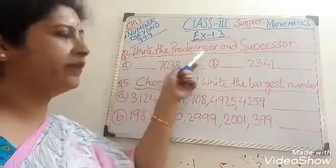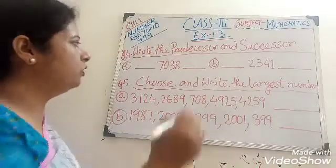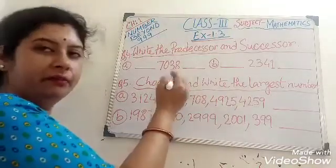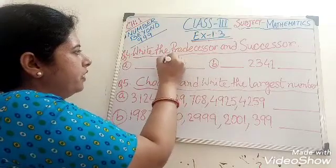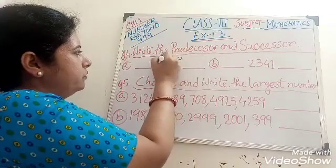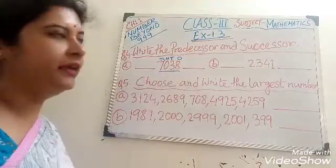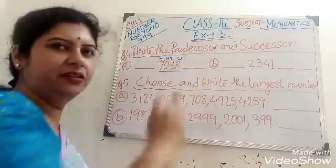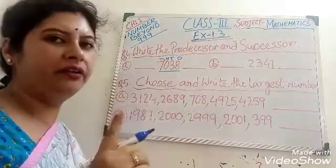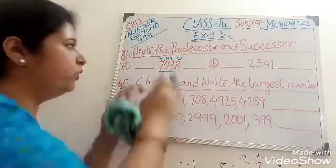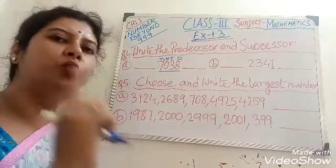Write the predecessors and successors. Our number is 7,038. In case of predecessors, children, just minus 1 from the given number. Which number is given to you? Just subtract 1.